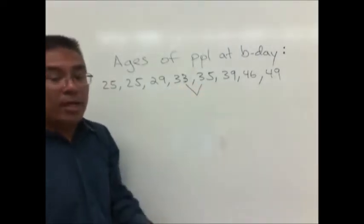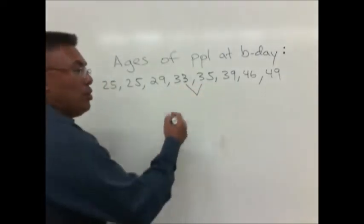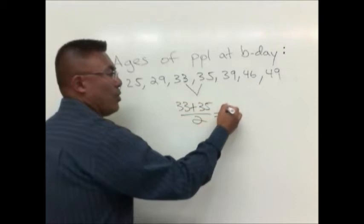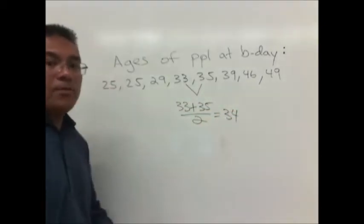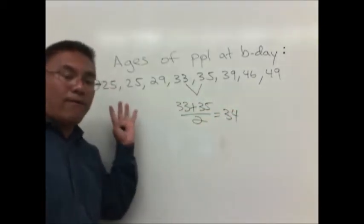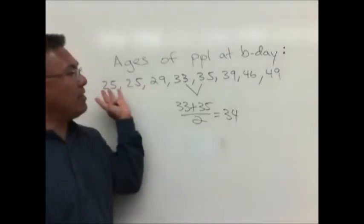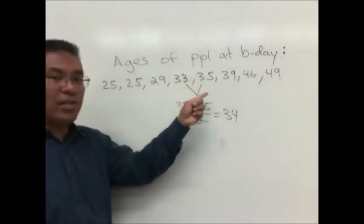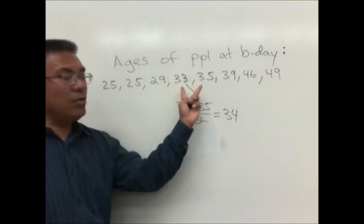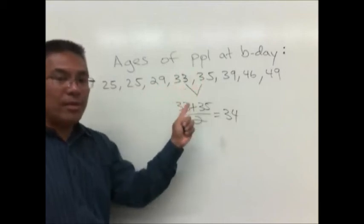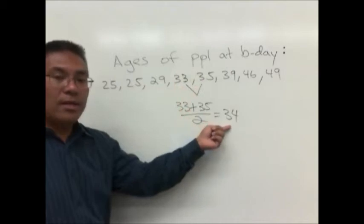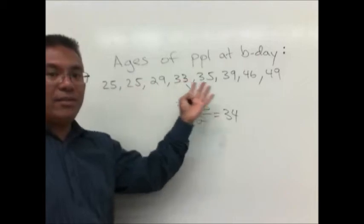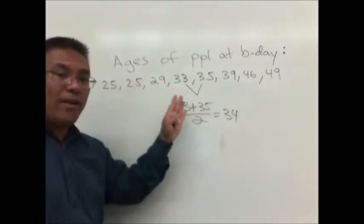Now just by looking at it, it should be obvious that it's 34. But in case the numbers are tricky, what you do to find the middle value is take 33 plus 35 divided by 2. So if you have a problem on the final exam where it's an even number of data points and there's no clear center, take the two numbers that are in the middle, add them together, divide by 2, and that will give you the median. You only need to do that when there's an even number of data points.